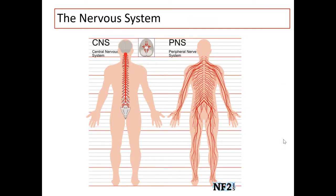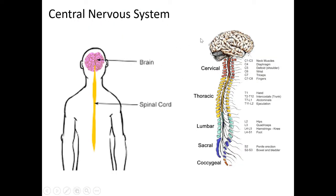The nervous system is split into two sections. There is the central nervous system, which is the brain and spinal cord running down the centre of the body. And there is the peripheral nervous system, which is all the other nerves that run off the central nervous system. The central nervous system only consists of our brain and our spinal cord. There are several different sections of the brain and spinal cord. The brain is covered in a future section and the spinal cord is mainly ignored.